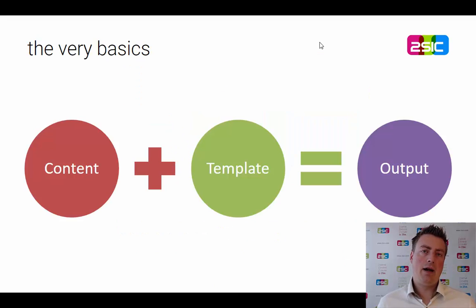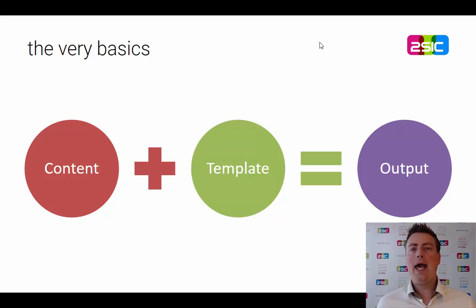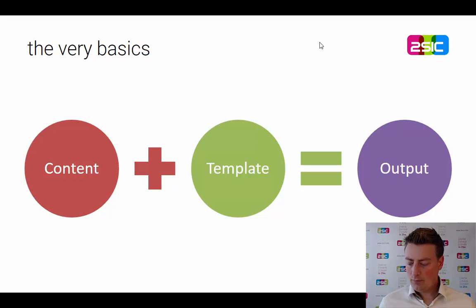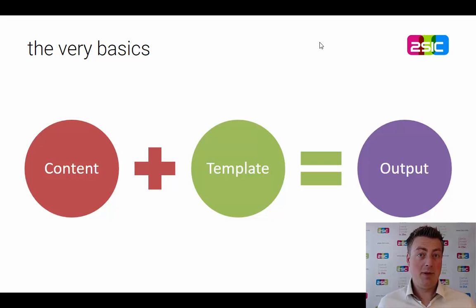Basically, what we have is we have information — the content — and we have a template which is used to visualize it, which says the title has this color, etc. And that will generate the output, namely the title with that color.